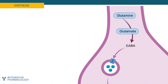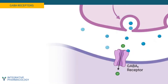The biosynthesis of GABA is shown here. Glutamine is the precursor. It is used to generate glutamate, and then glutamate is converted to GABA. GABA enters the presynaptic storage vesicle via a transporter, and it's stored there until an action potential triggers its release.